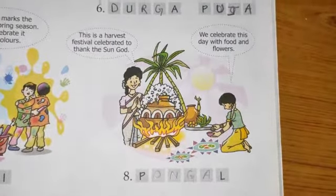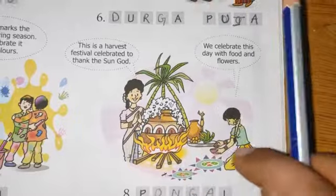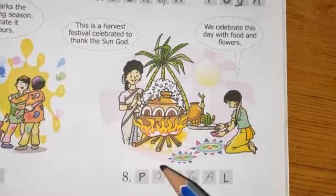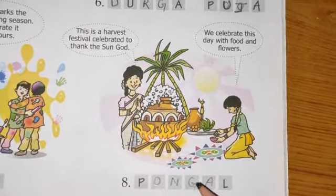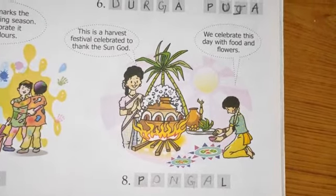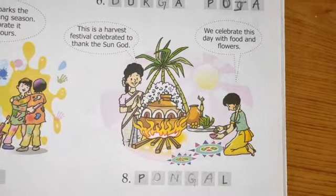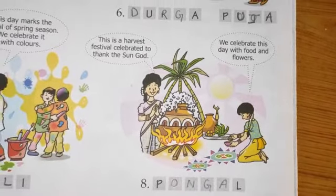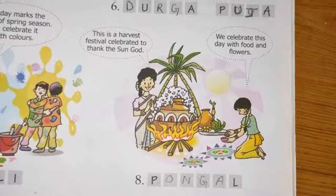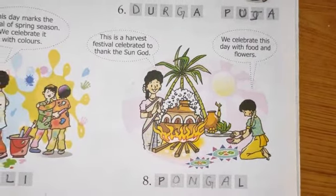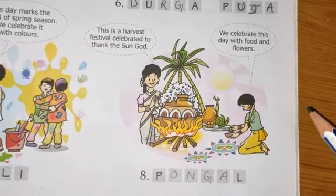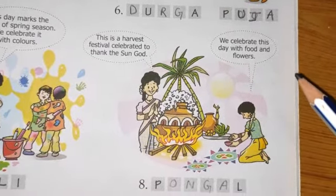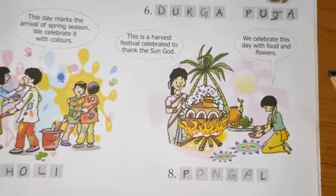The last clue: this is a harvest festival to thank the Sun God; we celebrate this day with food and flowers. This festival is known as Pongal — P-O-N-G-A-L — where the Sun God and Lord Indra are thanked for the good yield of crops. Pongal is mainly celebrated by the people of Tamil Nadu. A lot of delicious dishes are prepared and people worship the Sun God and Lord Indra. This completes the chapter.